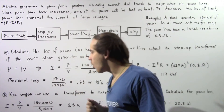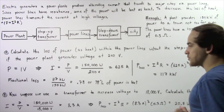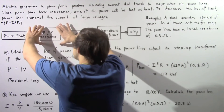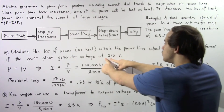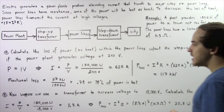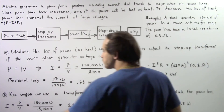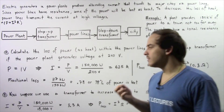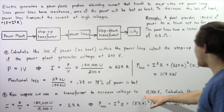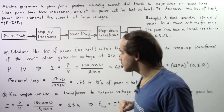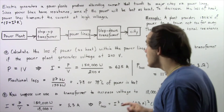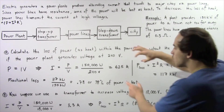Now in Part B, suppose we use a step-up transformer to increase the voltage to 18,000 volts — up from 240 volts. We want to calculate the power loss under these new conditions. Following the same steps, we calculate the electric current: I = 150,000 watts divided by 18,000 volts, which gives us 8.3 amps. We can see that increasing the voltage causes the current to drop significantly.